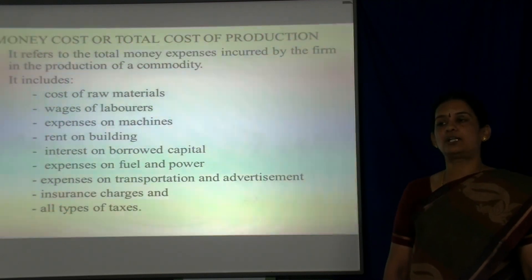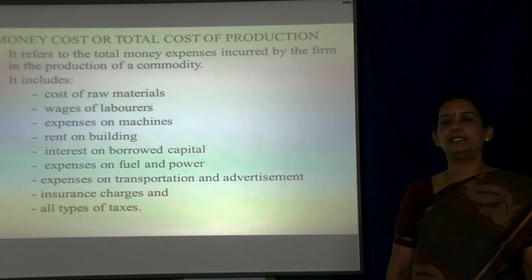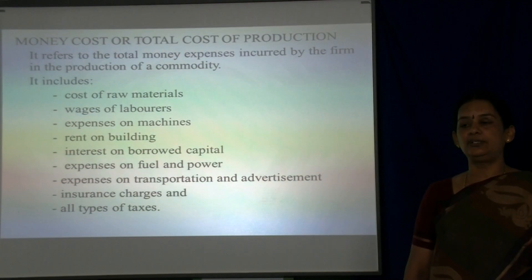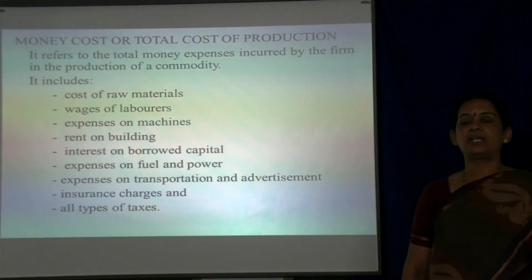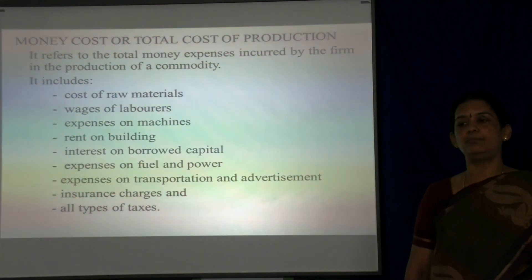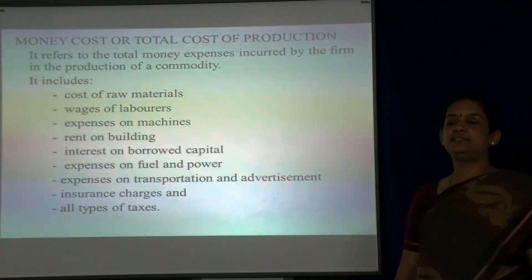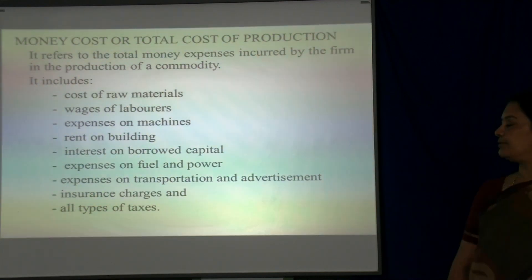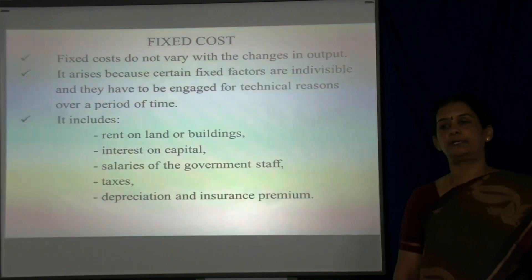Money cost or total cost of production refers to the total money expenses incurred by the firm in the production of a commodity. This money cost includes cost of raw materials, wages for the labourers, expenses on machines, rent on building, interest on borrowed capital, expenses on fuel and power, expenses on transportation and advertisement, insurance charges, and all types of taxes.